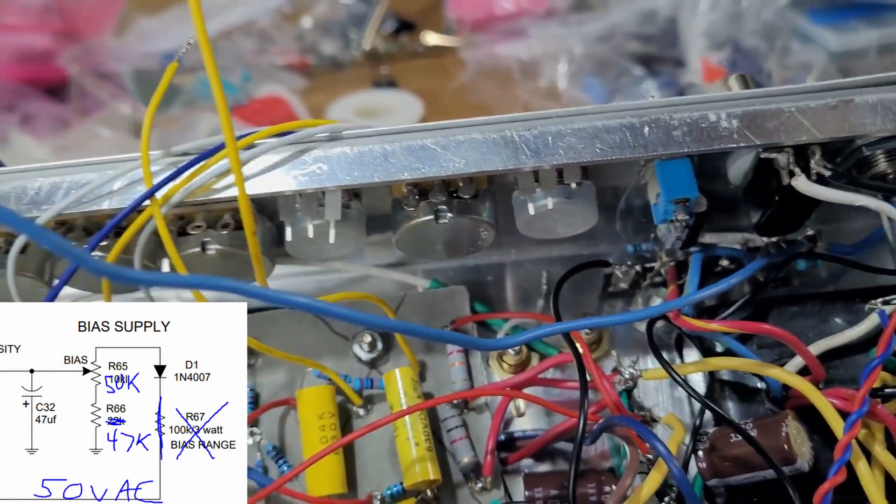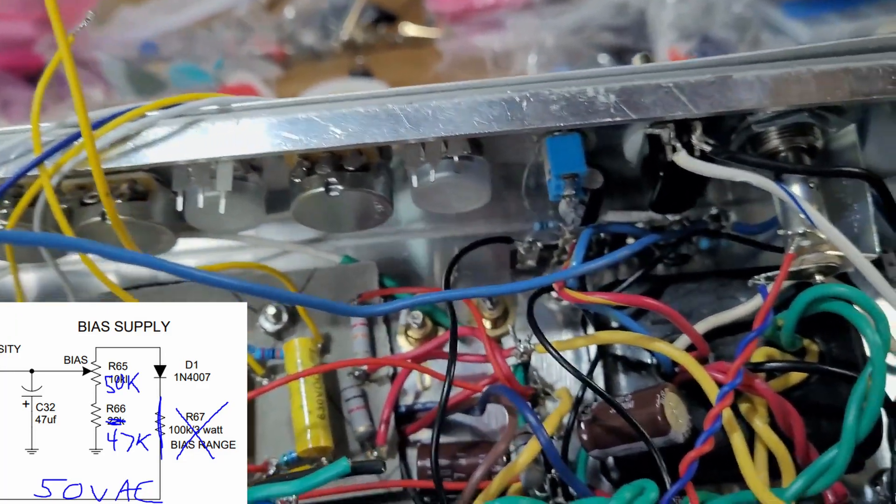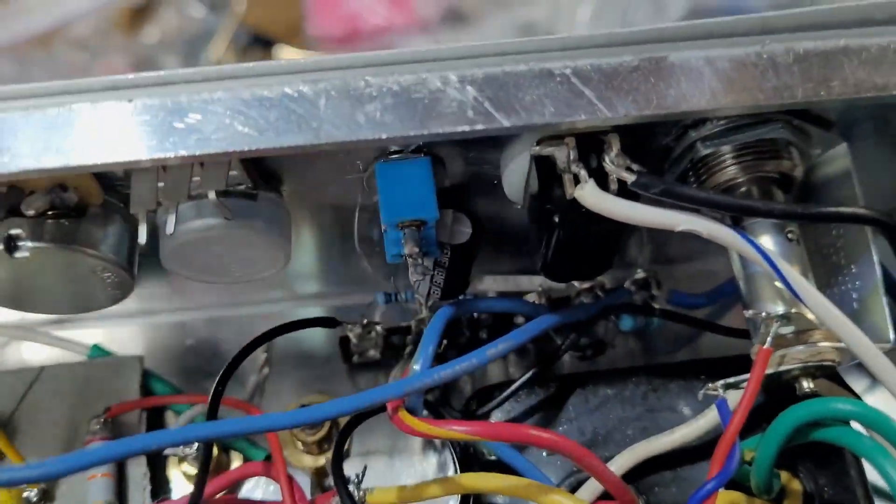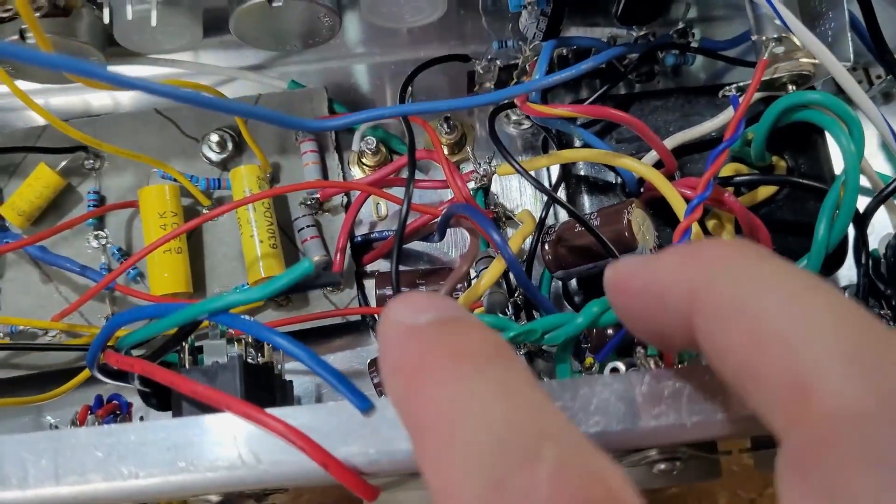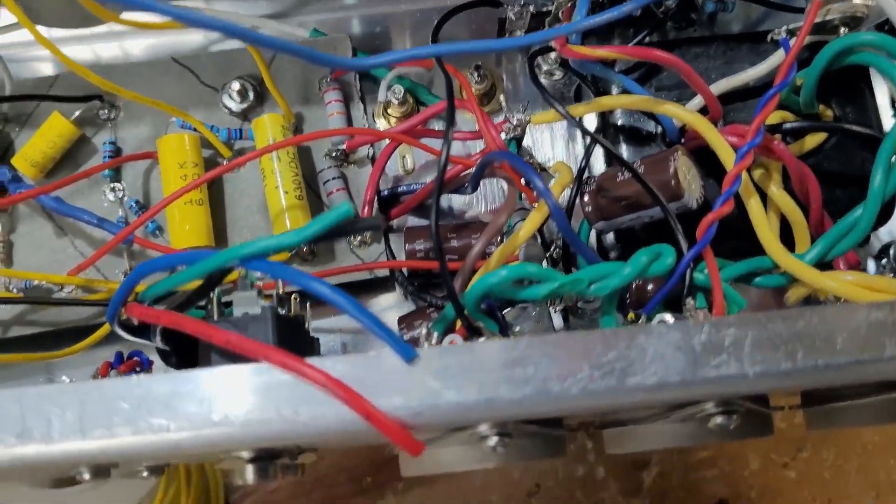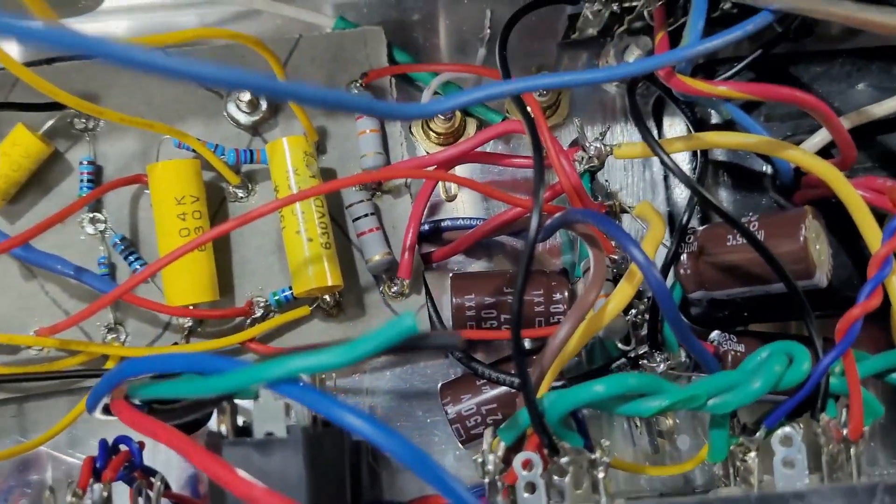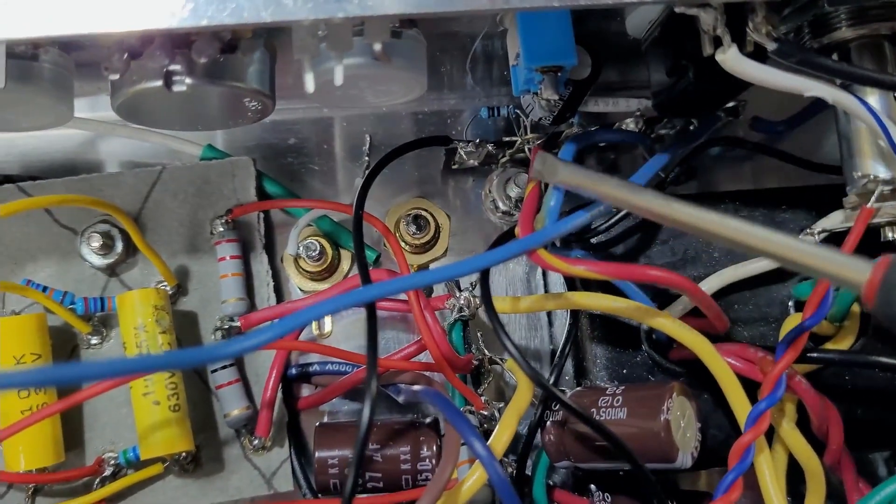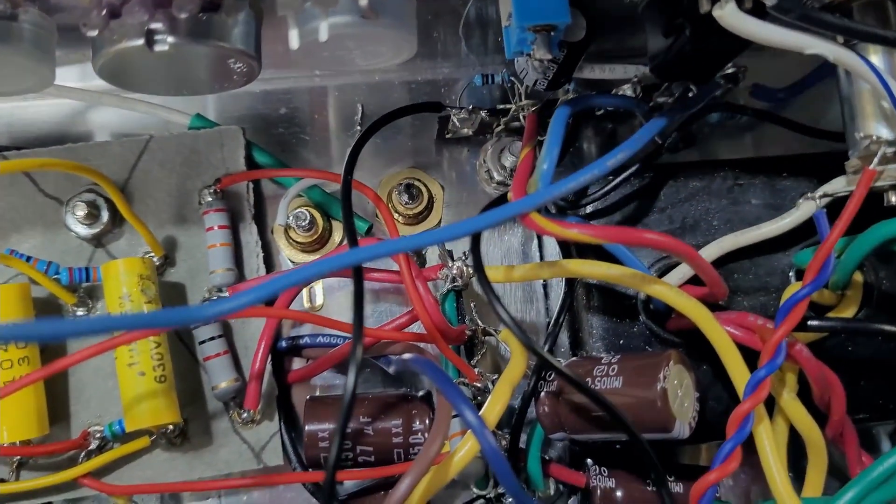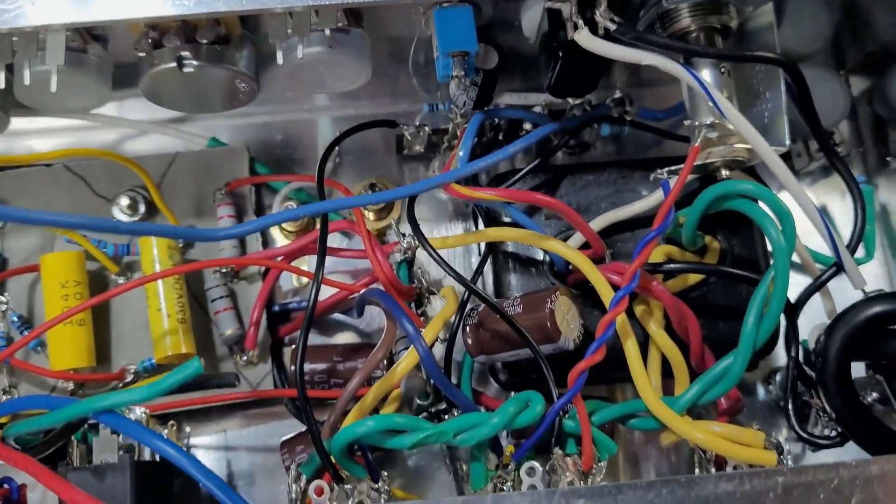So that was quite a bit of surgery. Basically, my bias pot is right here on that terminal strip. I also have these two black wires here, which are the cathodes of these 6V6s that are running to this position here and this position here. And I've got one ohm resistors. And then this is kind of my ground plane. So kind of a lot of different things going on in that area.